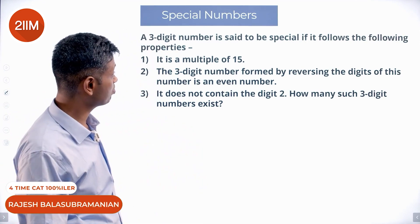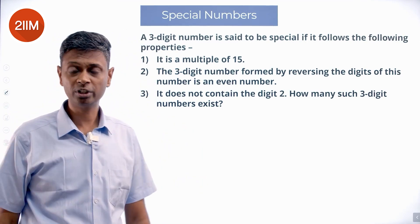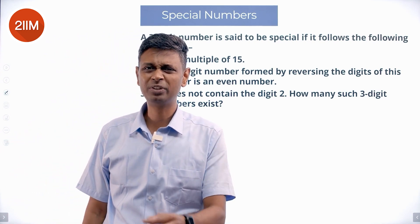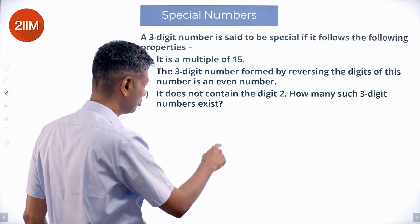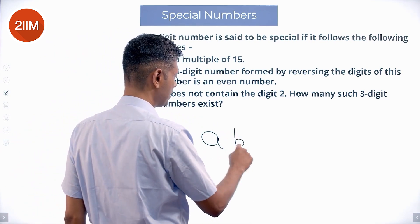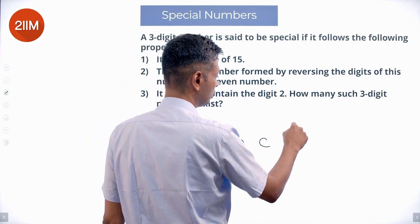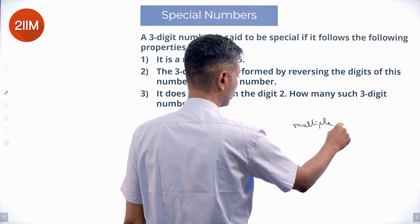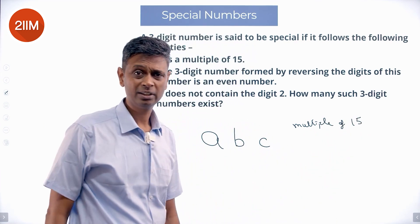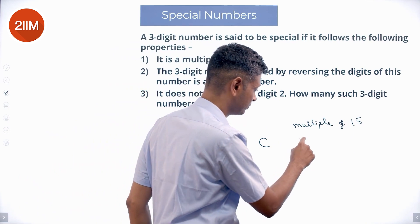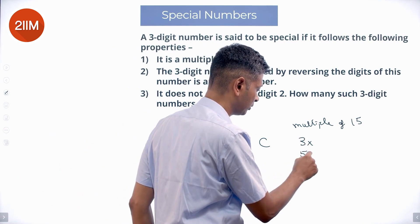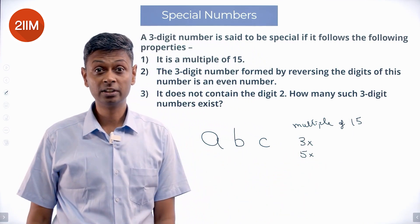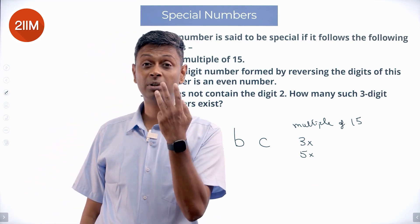A three-digit number is considered to be special if it follows the following property: it is a multiple of 15. So I am going to think about the three-digit number as A, B, C, multiple of 15. Straight away I know the multiple of 15, it should be a multiple of 3 and should be a multiple of 5.